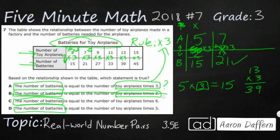I can see where the times 2 distractor comes from. If you're going side to side, take a look: 5 to 7 is plus 2. Side to side is going plus 2, plus 2 — so B is incorrect because it uses plus 2 across. And C is incorrect because it's looking at times 6, but those values are actually plus 6 across. So C is incorrect, and D is just incorrect because we know our answer is A.